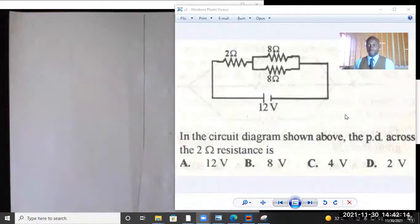Hello everyone. Yes, a similar question that we have here. We have two resistors in parallel, 8 ohm, 8 ohm. Then we have a 2 ohm resistor. The source voltage is 12 volts. The question says in the circuit diagram shown above, the PD across the 2 ohm resistor is. Indirectly they want us to find the potential difference across this 2 ohm resistor.